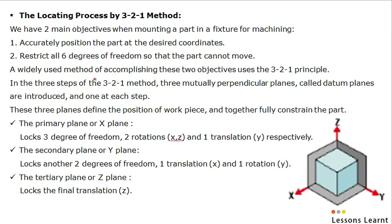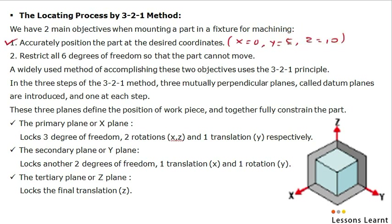The locating process by the 3-2-1 method. We have two main objectives when mounting a part in a fixture for machining. The first objective is to accurately position the part at desired coordinates — suppose X equals 0, Y is 5 and Z is 10. The second objective is to restrict all 6 degrees of freedom so that the part cannot move. To achieve these two objectives, we use the 3-2-1 principle.